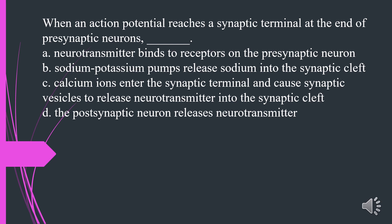When an action potential reaches a synaptic terminal at the end of a presynaptic neuron, what occurs? A. Neurotransmitter binds to receptors on the presynaptic neuron. B. Sodium-potassium pumps release sodium into the synaptic cleft. C. Calcium ions enter the synaptic terminal and cause synaptic vesicles to release neurotransmitter into the synaptic cleft. D. The postsynaptic neuron releases neurotransmitter. The answer is C.